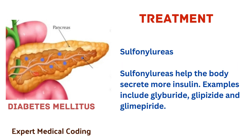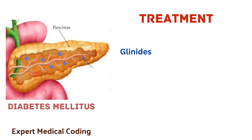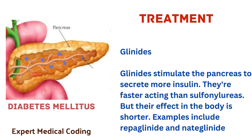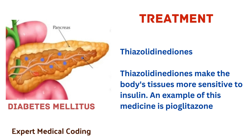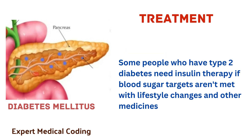Sulfonylureas help the body secrete more insulin. Examples include glyburide, glipizide and glimepiride. Glinides stimulate the pancreas to secrete more insulin. They are faster acting than the sulfonylureas but their effect in the body is shorter. Examples include repaglinide and nateglinide. Thiazolidinediones make the body's tissues more sensitive to insulin; an example is pioglitazone. Some people who have type 2 diabetes need insulin therapy if blood sugar targets aren't met with lifestyle changes and other medicines.